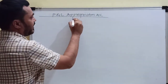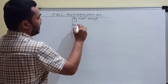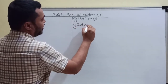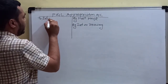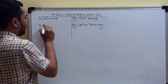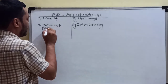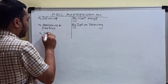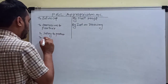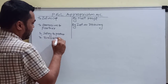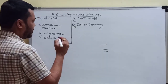On the credit side of the profit and loss appropriation account, we write: by net profit, by interest on drawing. On the debit side, we write: to interest on capital, to commission to partner, to salary to partner.